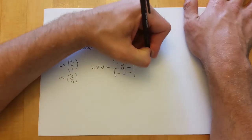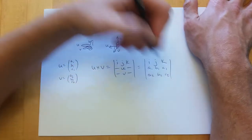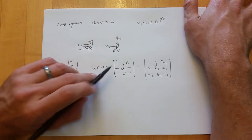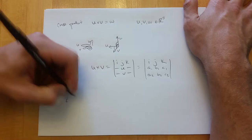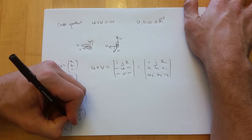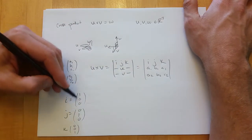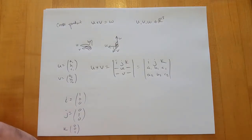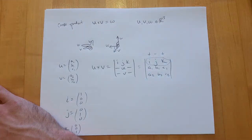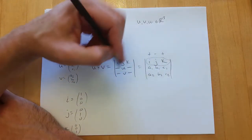For the definition, we have to be in R³. So u is (a1, b1, c1) and v is (a2, b2, c2). We take this as the definition — it's the determinant with i, j, k up top, then u as the second row and v as the third row. This is one of the few times you use vectors in rows.